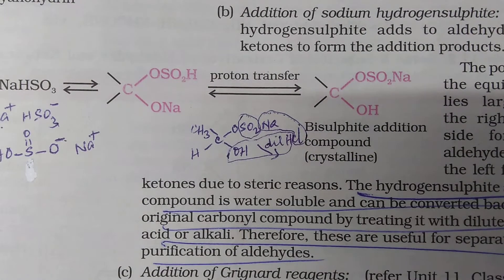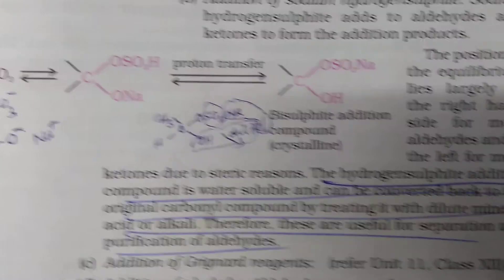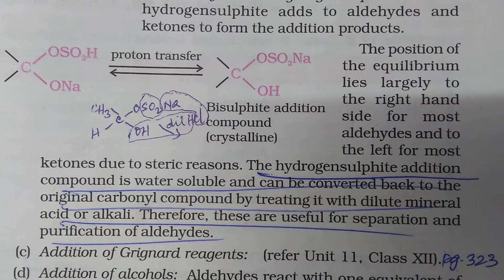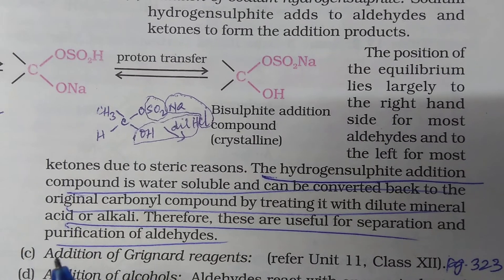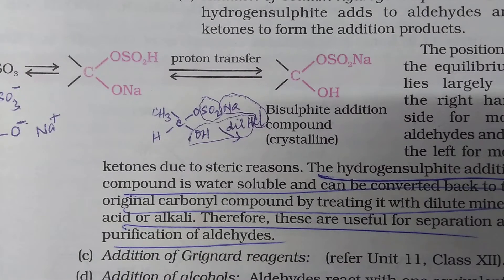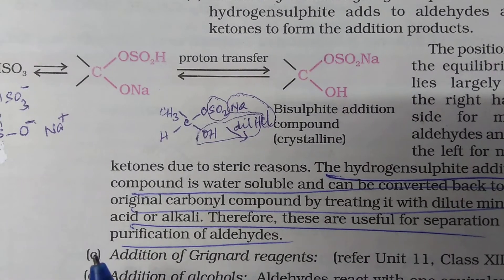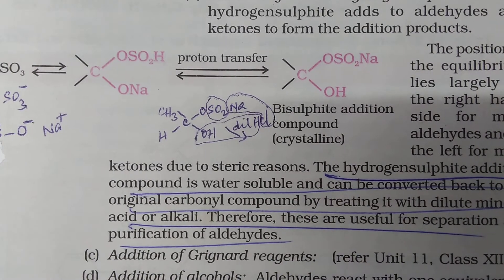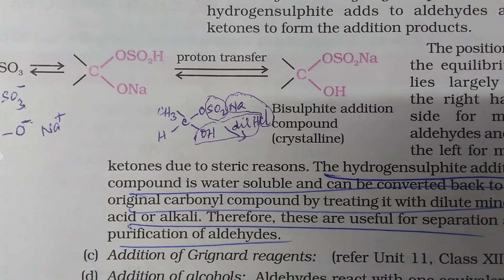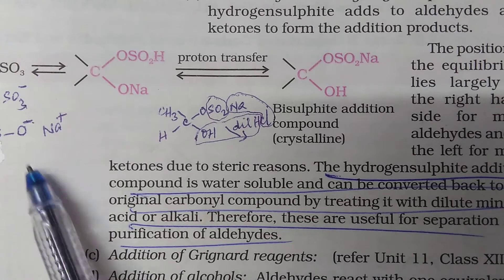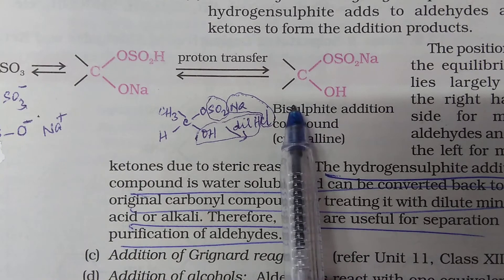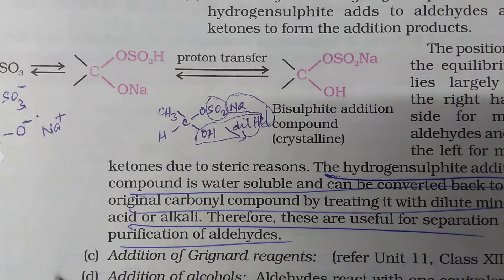What is the significance of this reaction? This reaction is very useful. Why is it very useful? It can isolate an aldehyde from a mixture. Supposing you are having an aldehyde and an acid and you have to find out what is there in the mixture. Then, if you do this sodium bisulfite test, what will happen? This will form an addition product from which the aldehyde can be extracted.